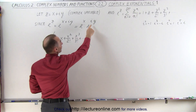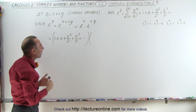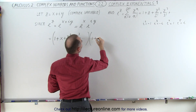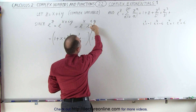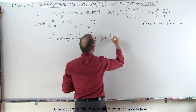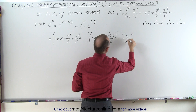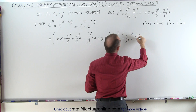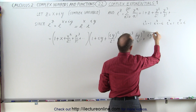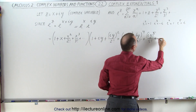Now we have that i in e to the iy, and when we square it, cube it, raise it to the 4th power and so forth, we have to account for those values. So e to the iy expands as 1 plus iy, plus iy squared over 2 factorial, plus iy cubed over 3 factorial, plus iy to the 4th over 4 factorial, plus iy to the 5th over 5 factorial, and so forth.